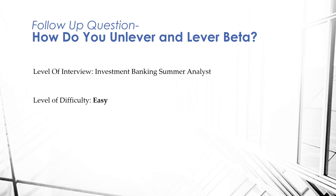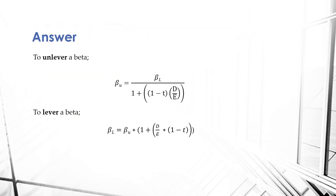How do you unlever and lever a beta measure? To unlever a beta, you take the levered beta and divide by 1 plus the tax-affected debt-to-equity ratio. To lever the beta back and apply the capital structure, you multiply the unlevered beta by 1 plus the tax-affected debt-to-equity ratio. The denominator used when unlevering is the same factor used to multiply when levering, so if you know one formula, you know the other.